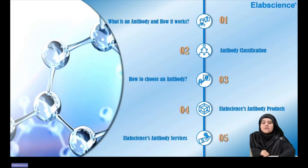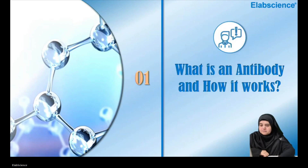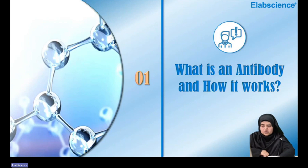Today I will give a systematic explanation of antibodies from different aspects: basic knowledge of antibodies and how they work, how to choose an antibody for your research, product lines of ELISA, their classification, and product advantages. Let's move on to our first part — what is an antibody and how it works.